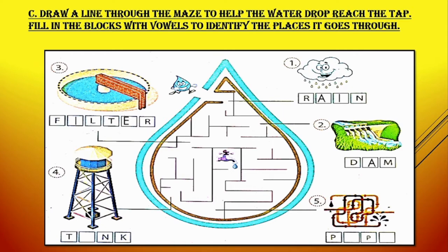The third one is filter. And after filtering, this water is stored in a tank. And after that, it is being sent for individual users' purposes through a pipe. You can see how it is being flowed through this drop.